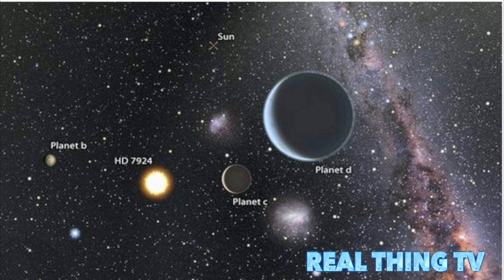The discovery brings the number of known planets in the HD 7924 system to 3. Another super-Earth, called HD 7924B, was spotted there in 2009.